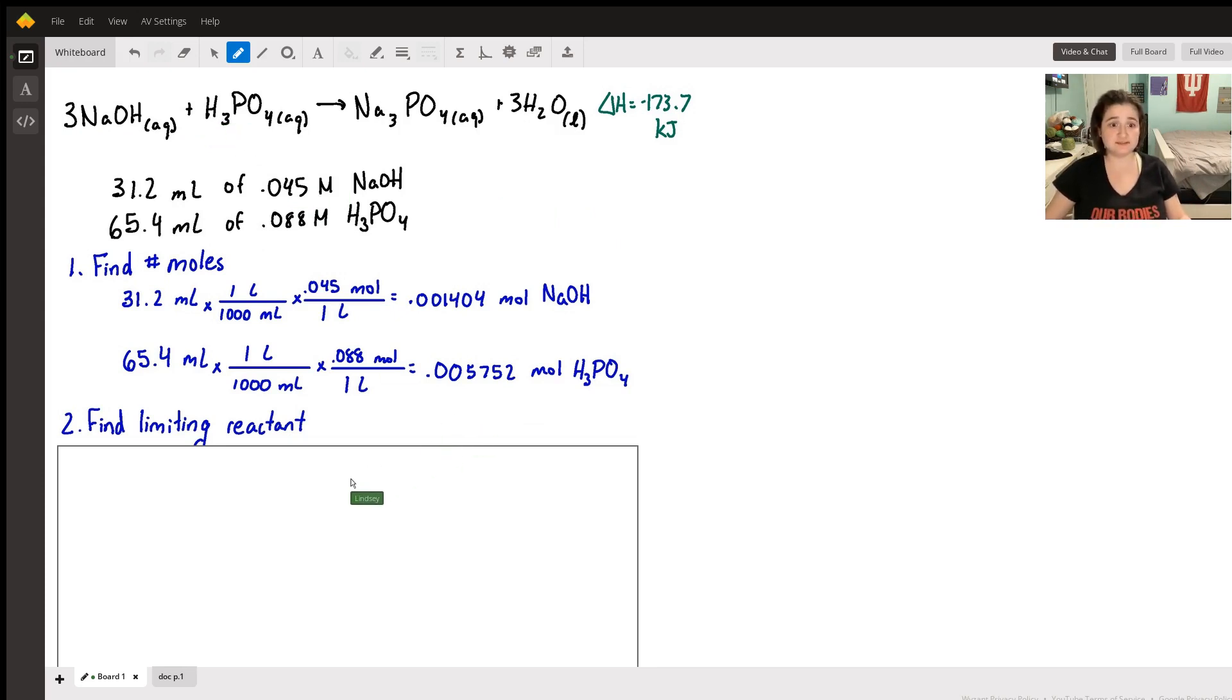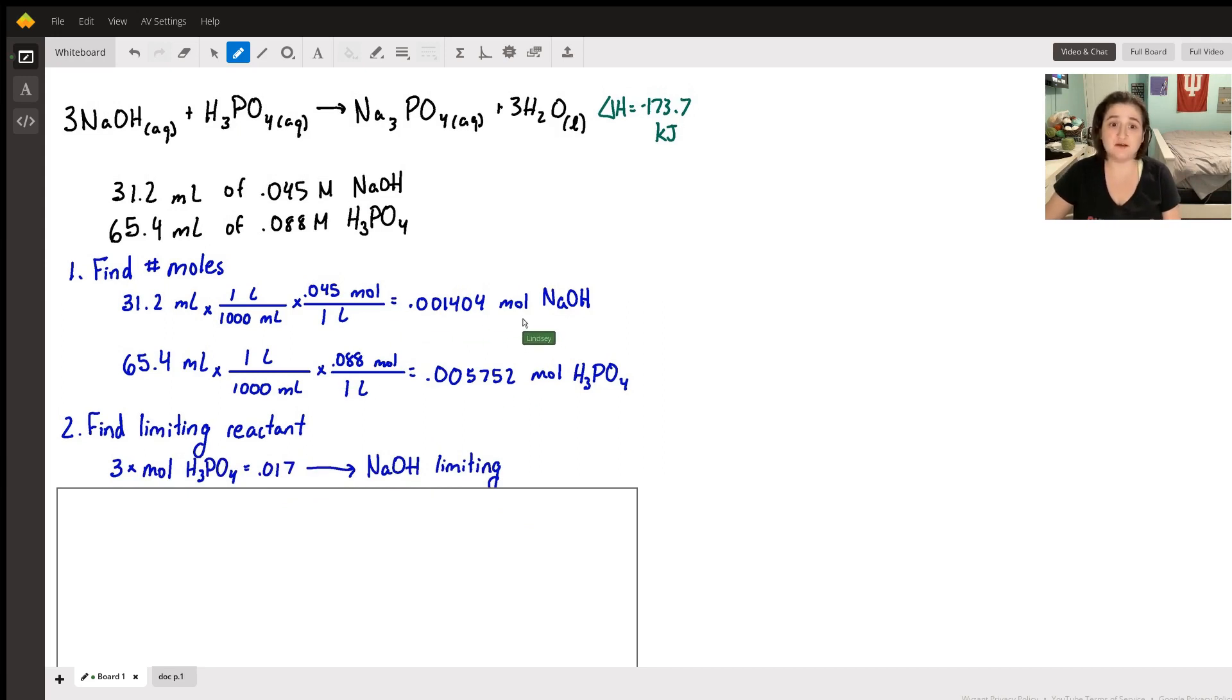I multiplied our molarity of phosphoric acid times three, that's 0.017, and that is more than we actually have of sodium hydroxide, so we know that sodium hydroxide is limiting. There are other ways to find this, this was just a quick shortcut that I like to take.